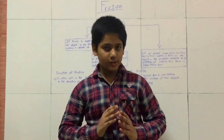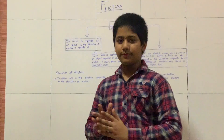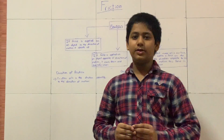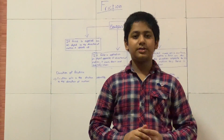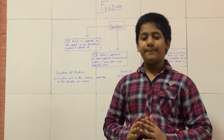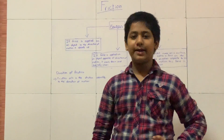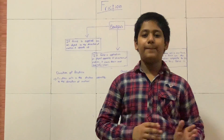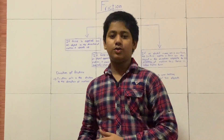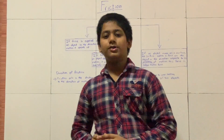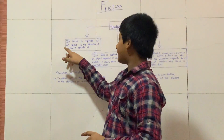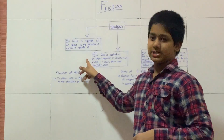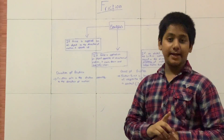You can write this definition: if the force is applied on an object in the direction of the motion, it speeds up. In the bicycle case, the man applied force in the same direction the bicycle was moving, so the cycle moved forward faster.